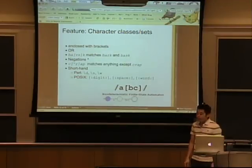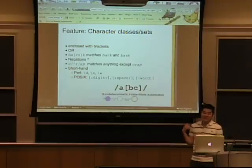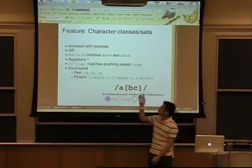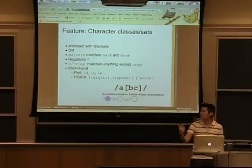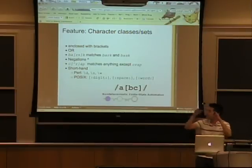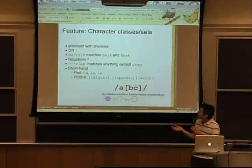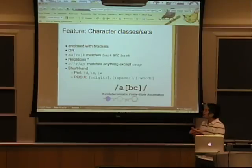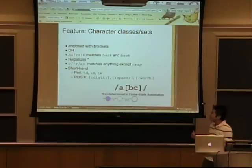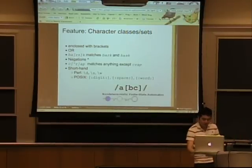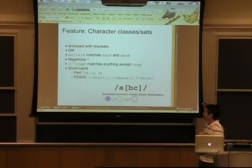Regular expressions also have a kind of Boolean-or mapping using brackets. These are called character classes or character sets. Let's say we want to match 'Bark' or 'Bask'. We can write 'BA' and use the brackets to specify the possible options — in this case, R or S — followed by K. When matching the string, we look for a B, then an A, then either R or S, then K, and that will match 'Bark' or 'Bask'. Character classes also support negations — we can say we don't want any of these options. There are also shorthands for certain commonly used classes.